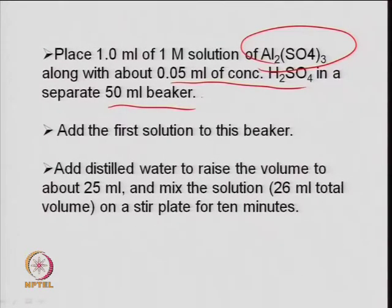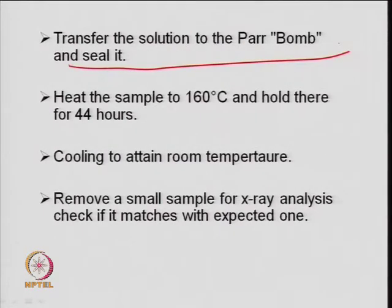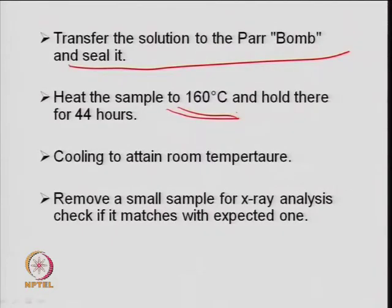Now you have 2 solutions - the first solution is mixed into the second. One is the source of silica, another is the source of alumina, mixed together. Add distilled water to raise the volume to approximately 25 ml and stir it under some temperature conditions for 10 minutes for uniform mixing. Then transfer this into a bomb reactor - a high-pressure reactor - because it is a hydrothermal synthesis. For ZSM-5, 160 degrees centigrade for roughly 44 hours, though this can vary from 36 to 44 hours or even 3 to 4 days.